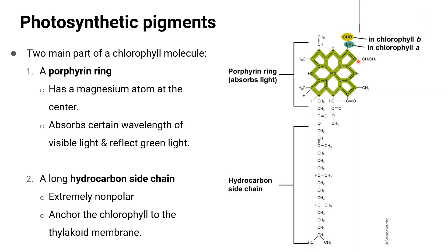If the porphyrin ring has a CHO group, this will become chlorophyll B; if it has CH3, this shall become chlorophyll A. The second part is a long hydrocarbon side chain that is extremely non-polar, and this anchors the chlorophyll to the thylakoid membrane.